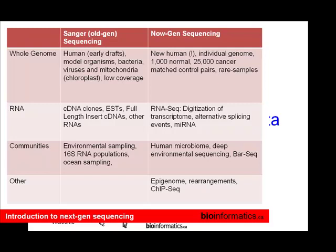From a community assessment perspective, environmental sampling, 16S RNA sequencing, ocean sampling — Craig Venter's first ocean sampling of viruses and bacteria — were all done on the old technology.